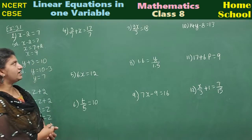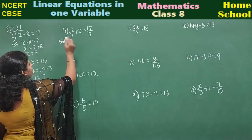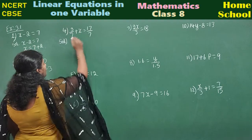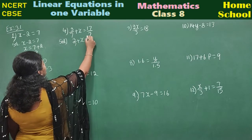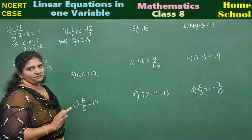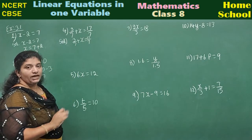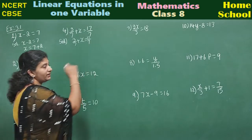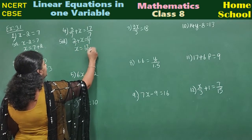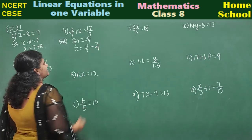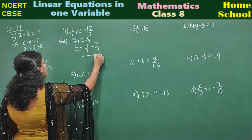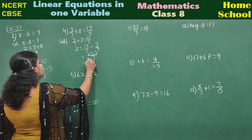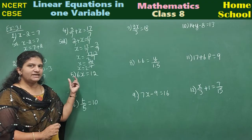Fourth: 3/7 plus x equal to 17/7. Variable is x. Transpose 3/7 to the other side — it becomes negative: x equals 17/7 minus 3/7. With the same denominator 7, this gives 14/7, which equals 2. X value is 2.